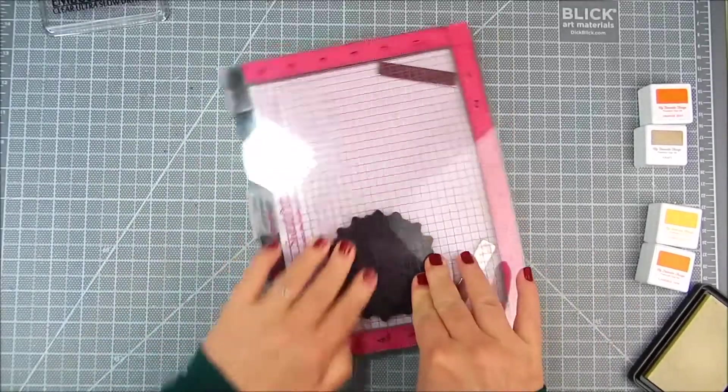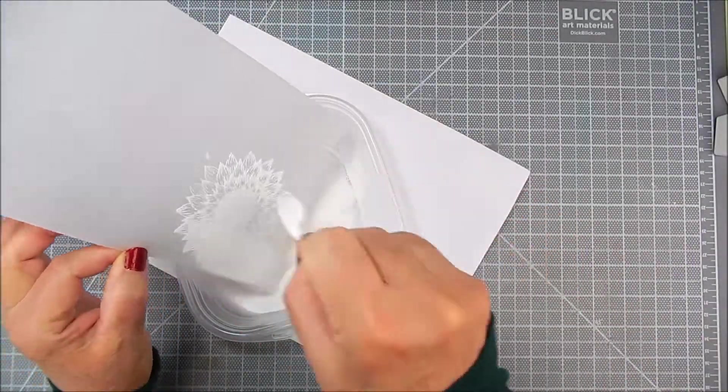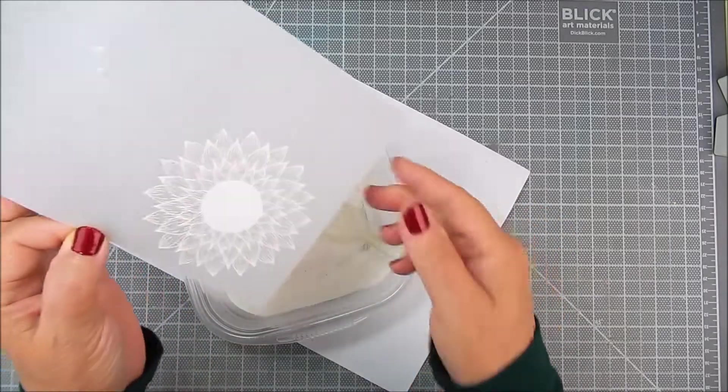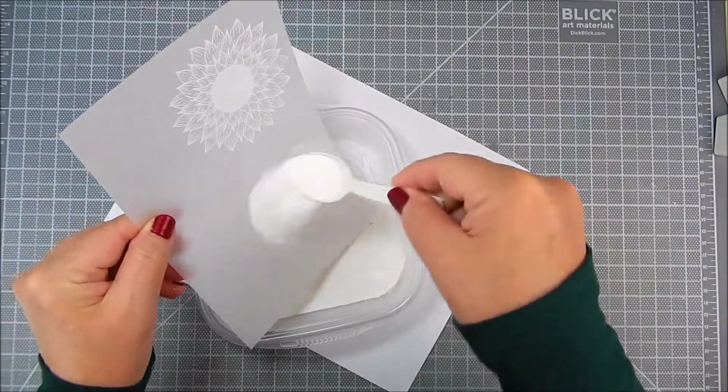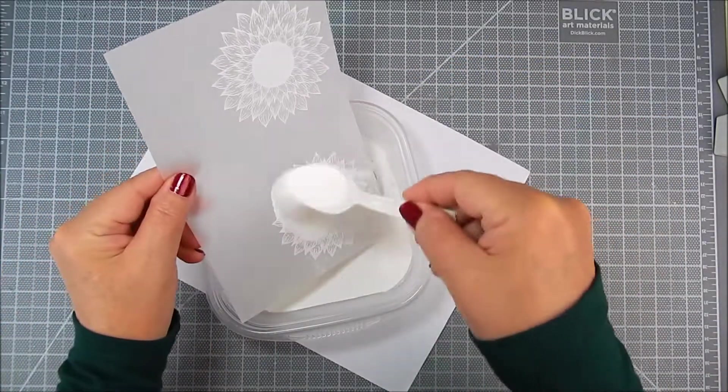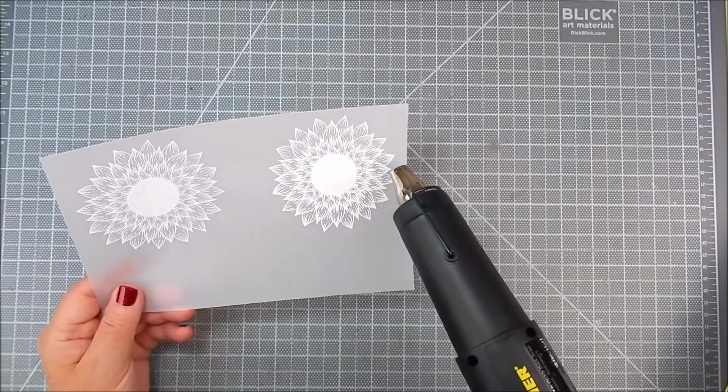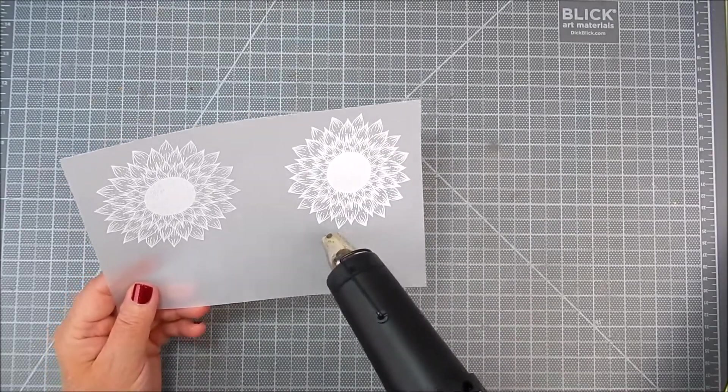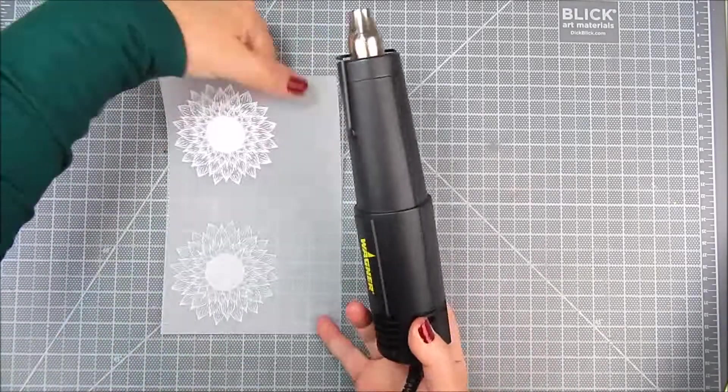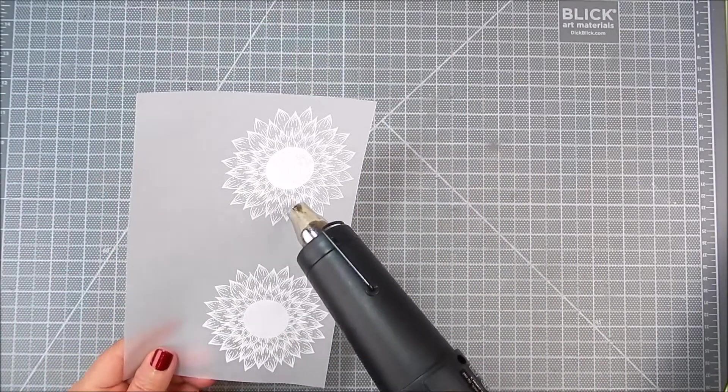This fits the MFT brand of dies. Now I am heat embossing in white embossing powder sunflowers. I'm using two at a time here. I stamped with WOW embossing ink pad and I'm heat embossing in white with a heat tool.